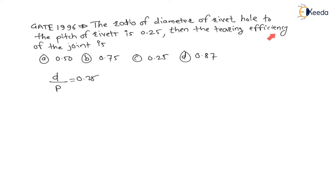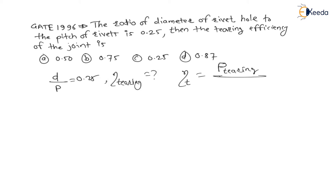Then the tearing efficiency of the joint is to be found. The tearing efficiency is nothing but the tearing force carrying capacity divided by the force carrying capacity of the unriveted plate.